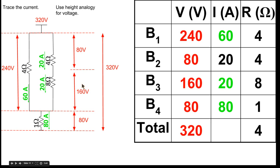So if I take 80, I add it to 160 and add it to 80, I get 320 volts. So that's the entire voltage drop for the circuit is 320 volts.